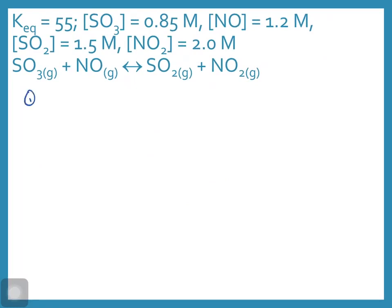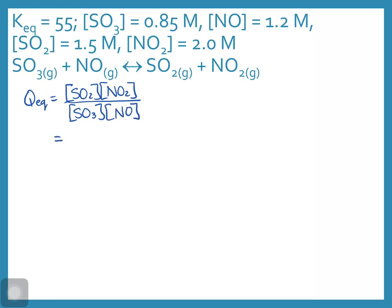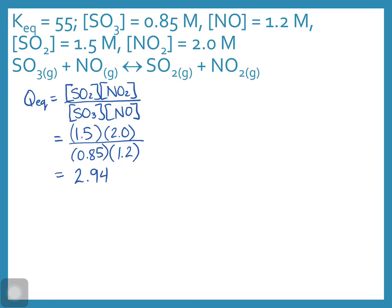Solving for Q_eq, that equals concentration of products over reactants. All coefficients are 1, so all exponents are 1. Plugging in the values: SO2 = 1.5 M, NO2 = 2 M in the numerator, and SO3 = 0.85 and NO = 1.2 in the denominator. Multiplying those out, Q_eq equals 2.94, while K_eq equals 55.